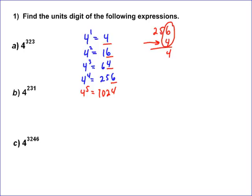The odd powers result in a unit's digit of 4. The even powers result in a unit's digit of 6. So for A, the unit's digit of 4 to the 323 is 4. The unit's digit of 4 to the 231st is 4 because it's odd. And then the unit's digit of 4 to the 3246 is 6 because it's even.